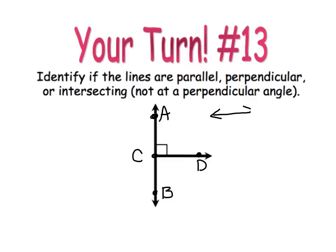Okay. We have line AB and we have ray CD. Hope you caught that. And I see that there is a right angle right here. So I'm going to say that line AB is perpendicular to ray CD. Did you get that one?